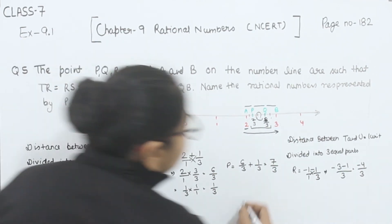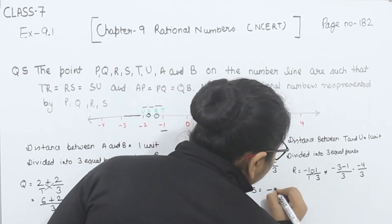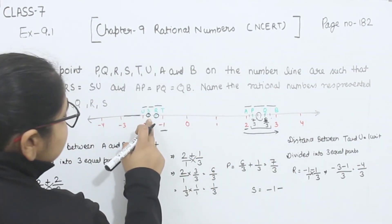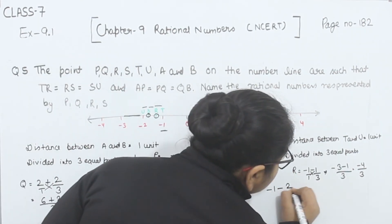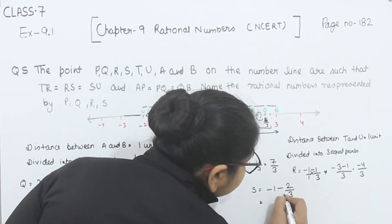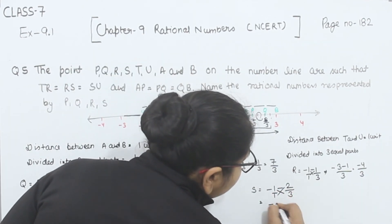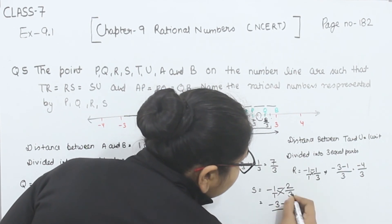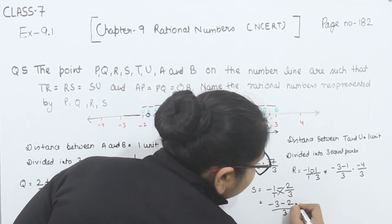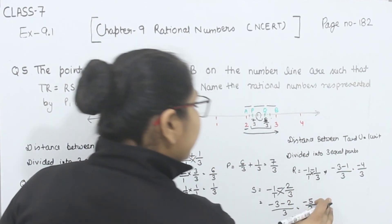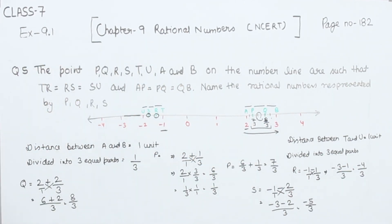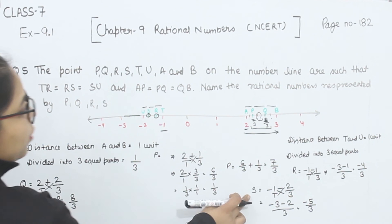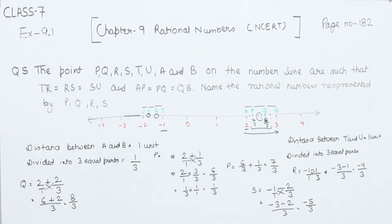Now for the point S, this is minus 1 minus 2/3 — the second part. Multiplying: minus 3 minus 2 over 3. Minus and minus gives plus, but the sign remains negative, so minus 5/3. So the value of point S is minus 5/3. With this, we have completed question number 5. In the next video, we are going to start with question number 6.